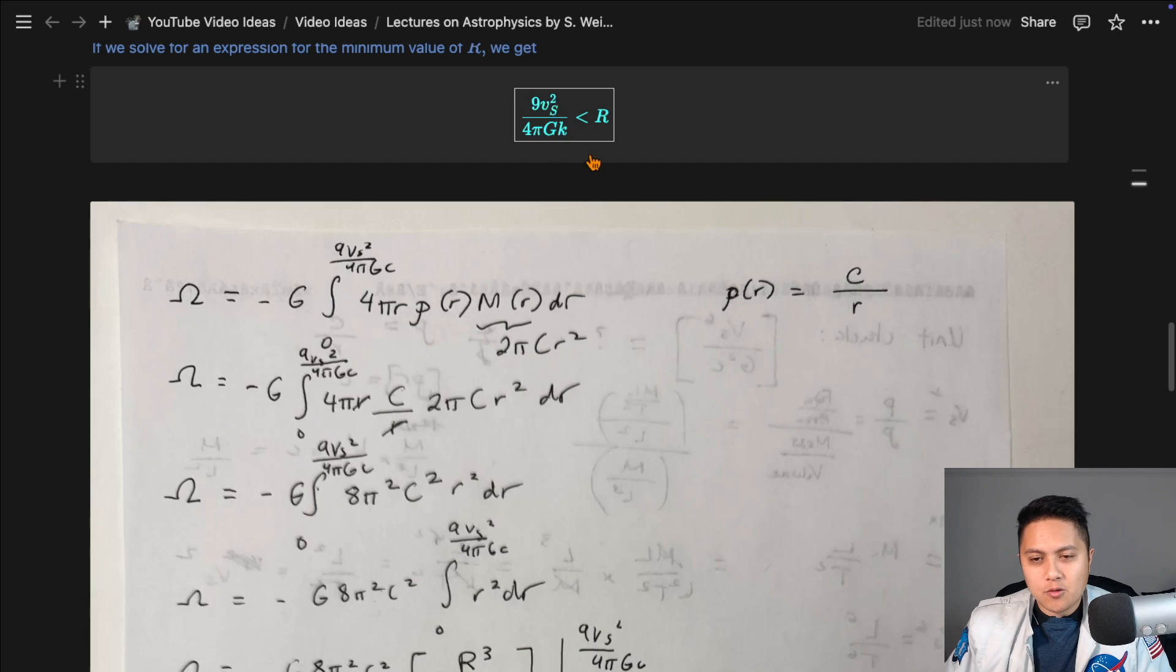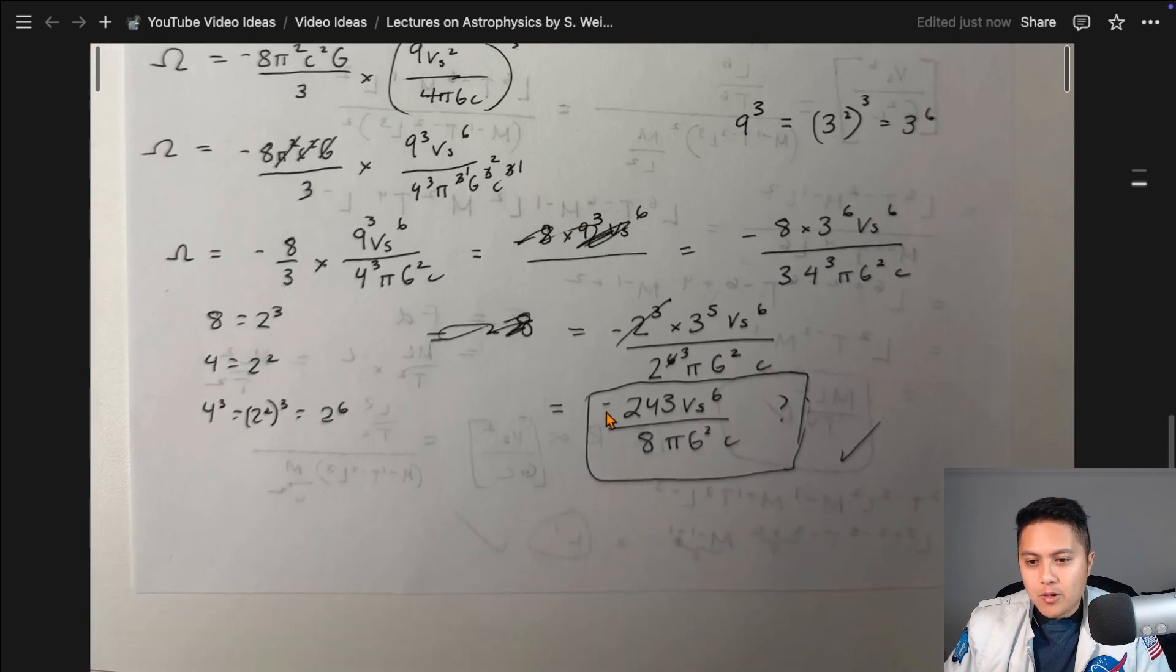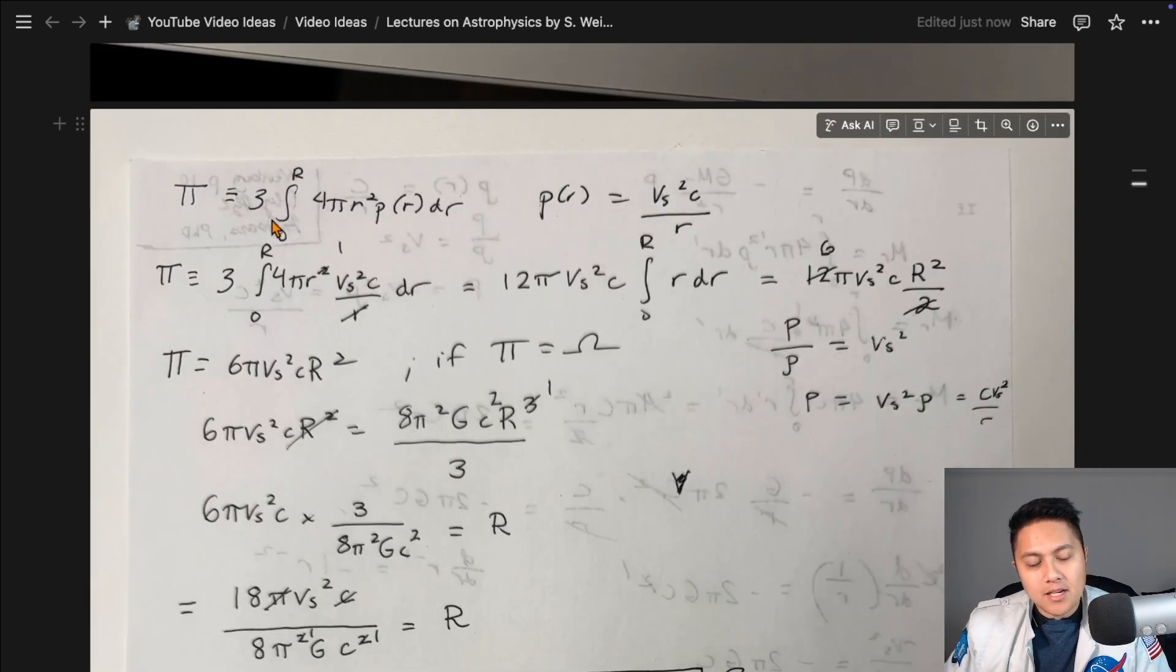And the original problem, I believe the constant was just c, not k. So just in your mind, change k to c when you're looking at this integral here. If you go all the way down here, through all the algebra, you should get an expression that looks like 243 speed of sound to the sixth over 8 pi g squared constant.